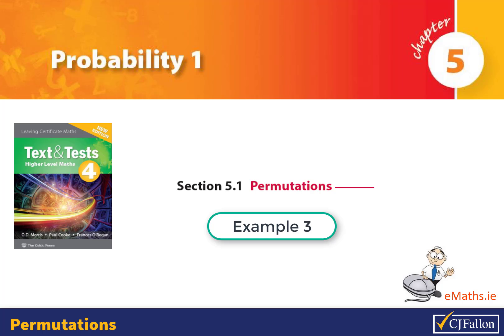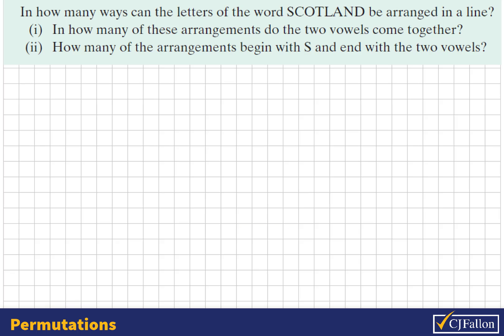This is a permutations probability question for Leaving Cert higher level students. In how many ways can the letters in the word Scotland be arranged in a line?